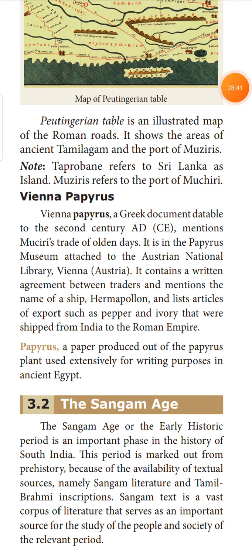You can also see the Peutinger Table — almost like a map — which gives sea routes and shows how maps were used by people to have trade relationships with ancient Tamilakam. The port of Musiri has a special mention in this map. The Vienna Papyrus is a Greek document that also serves as important evidence about our Sangam society.